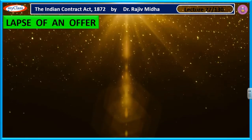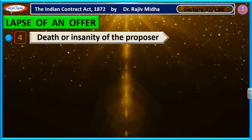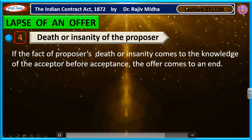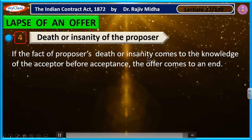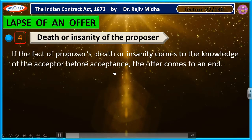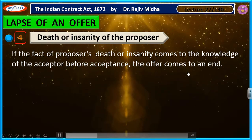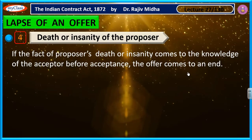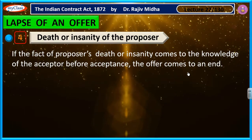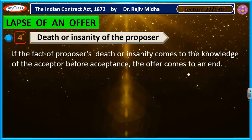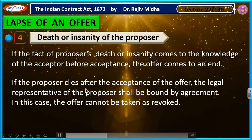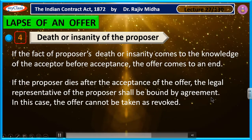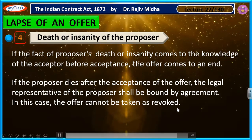The fourth point is death or insanity of the proposer. If the fact of the proposer's death or insanity comes to the knowledge of the acceptor before acceptance, the offer comes to an end. However, if the proposer dies after the acceptance of the offer, the legal representative of the proposer shall be bound by the agreement — in this case the offer cannot be taken as revoked.